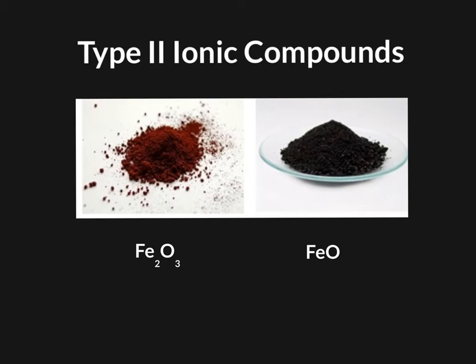All right, everybody. Today we're going to take a look at Type II ionic compounds. Type II ionic compounds come from metals that are in the transition metals family.